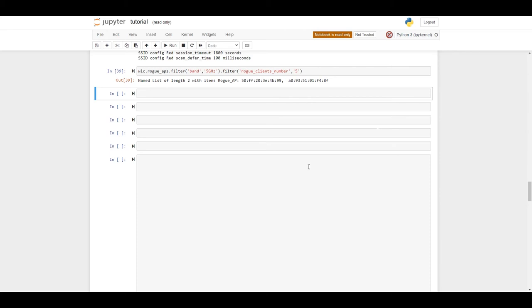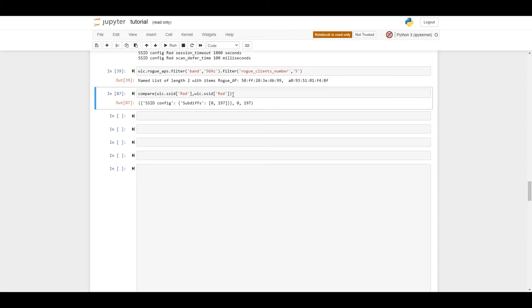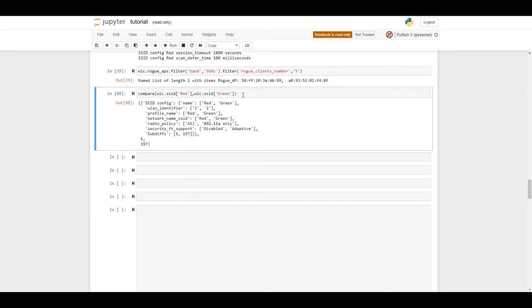Let's see some ready-to-use functions. First, start with analysis of configuration data. In this demo, there is a function named compare. You can supply it with any config elements to compare and get the result of comparisons. Let's try to compare the configuration of SSID Red with configuration of SSID Red. As we might expect, there should be no difference. Let's try to compare the configuration of SSID Red with SSID Green. Now, we can clearly see in the output that out of about 200 parameters compared, six are different. For example, radio policy. That's a nice instrument for config comparison.